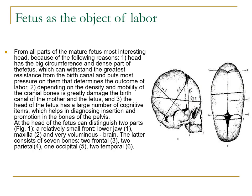From all parts of the mature fetus, the head is most important because it has the biggest circumference and is the densest part of the fetus. It can withstand the greatest resistance from the birth canal and puts the most pressure on it, determining the outcome of labor. Depending on the density and mobility of the cranial bones, it is greatly influenced by the birth canal of the mother. The head of the fetus has a large number of reference points which help in diagnosing insertion and progression in the bones of the pelvis.